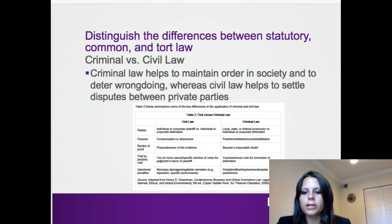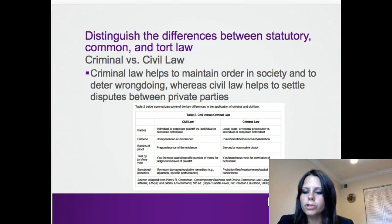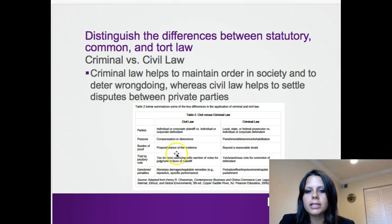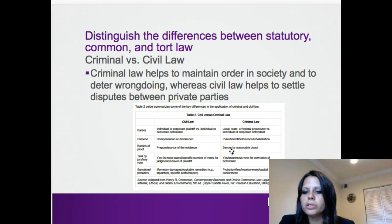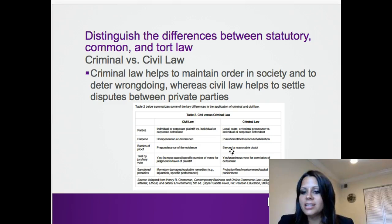Let's look at the differences between statutory, common, and tort law. Criminal law helps to maintain order in society — the idea is to deter wrongdoing, and people face jail and/or fines as a consequence. Civil law helps to settle disputes between private parties, and the resolution is usually money. In civil law, a preponderance of the evidence is enough to prove that somebody is liable — we say liable instead of guilty. Whereas in criminal law, the burden of proof is beyond a reasonable doubt, and generally the government must prove that the person is guilty, otherwise they're considered innocent. That means proving to a jury unanimously that the person is guilty, and it's hard to get 12 people to agree on anything.